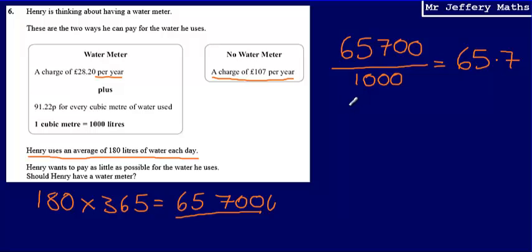So let's now work this out. We're going to say that is 65.7 multiplied by, and I'm going to convert that into pounds. So dividing that by 100, 91.22p is going to be, in pounds, 0.9122.